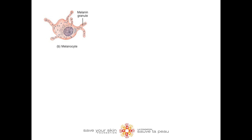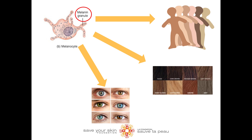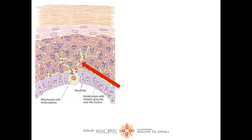The cells affected in melanoma are called melanocytes. Melanocytes produce a substance called melanin. Melanin is a pigmented substance that gives our skin, hair, and eyes their color. Normally these cells are present at the bottom of the epidermis, and have extensions that project up throughout the epidermis. These projections carry melanosomes, which are small balloons carrying melanin to different cells within the epidermis.